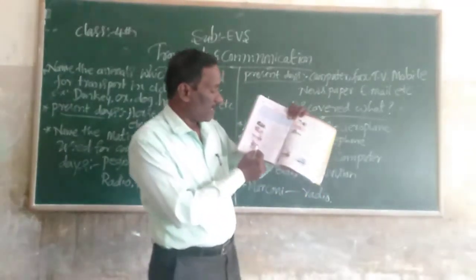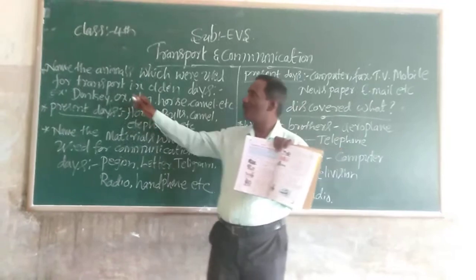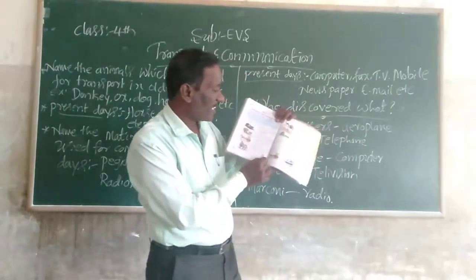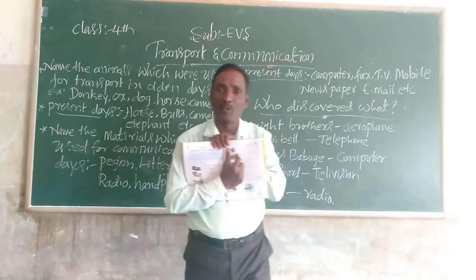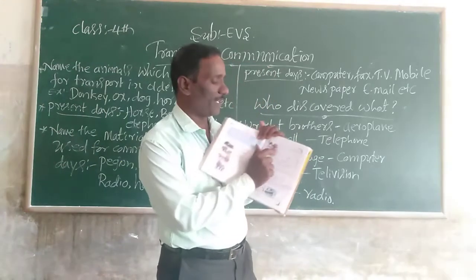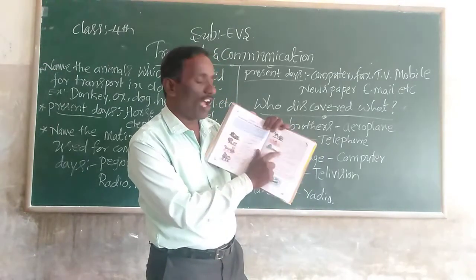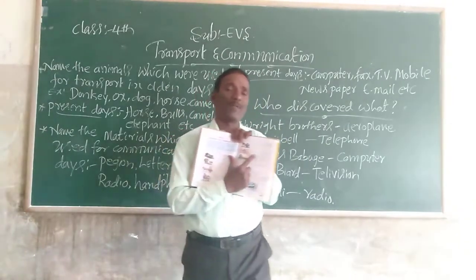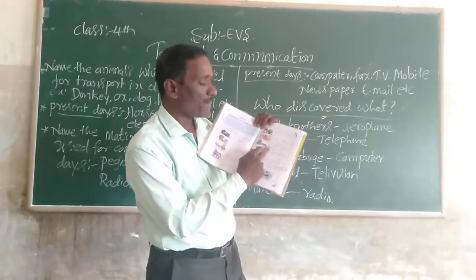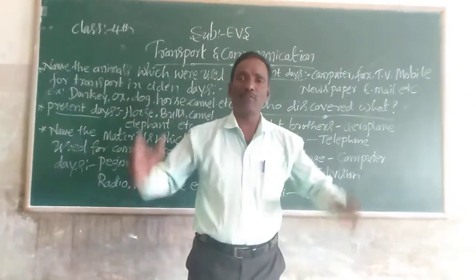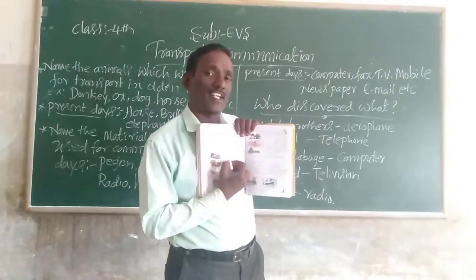Next, fourth picture: the donkey carries heavy loads. The donkey is one of the transport animals used in the golden days. Next, camel — camel is the ship of the desert. Camel carries the cord, and people ride camels in the desert area. Next, elephant — elephant carries heavy wood. Observe your textbook and write what are the specialties of these pictures.